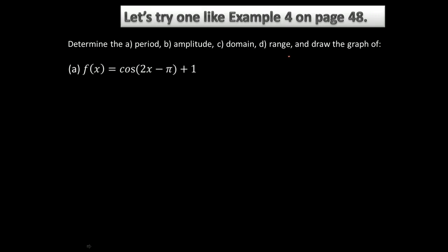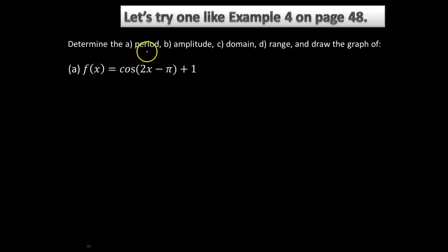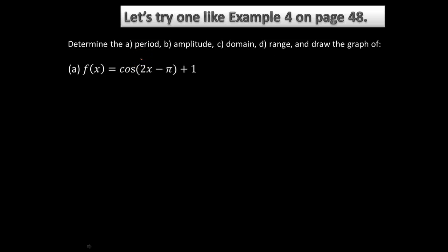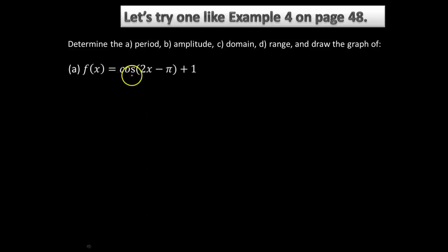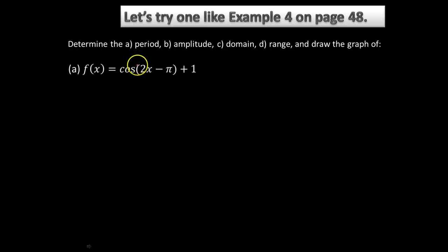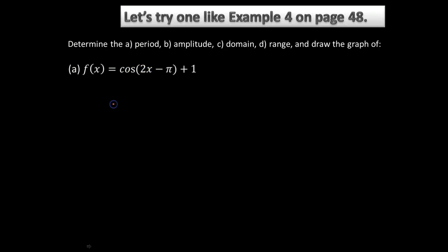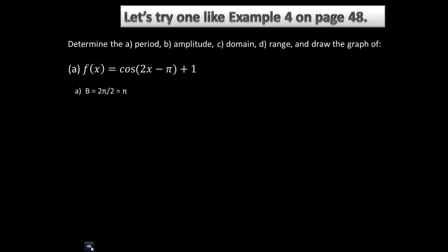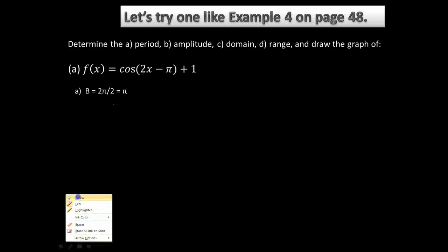Our function is f(x) = cos(2x - π) + 1. So part A, the period. What I just said on the last slide was, all you really need to do is take the normal period of this function, so the normal period of cosine is 2π, divided by the coefficient of x. So 2π divided by 2 is going to give us a period of just π for this function.